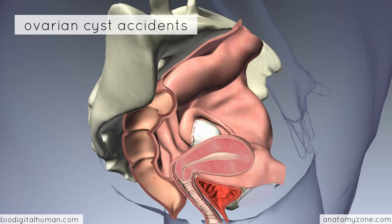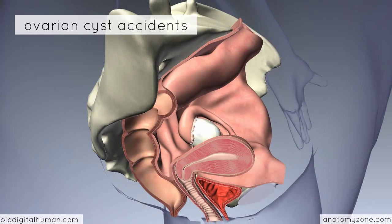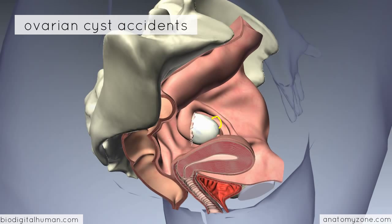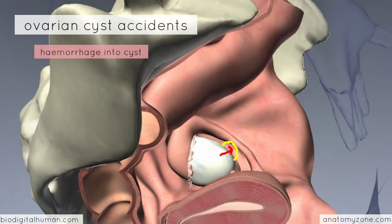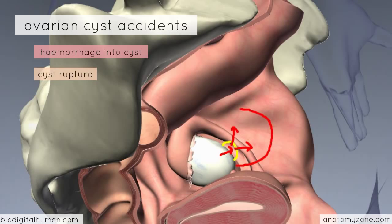The ovaries are suspended in the peritoneal cavity by the mesovarium. There are three things that can happen: you can get haemorrhage into the cyst itself, you can get rupture of the cyst into the peritoneal space, or the cyst can become so large that it actually causes the ovary to twist round on itself, resulting in a compromised blood supply to the ovary.